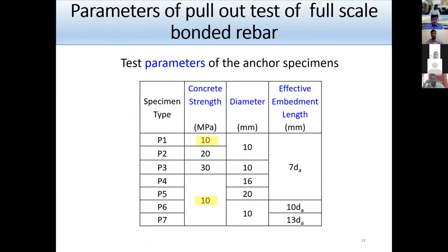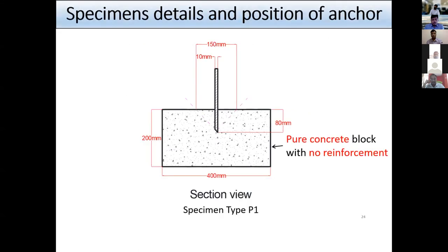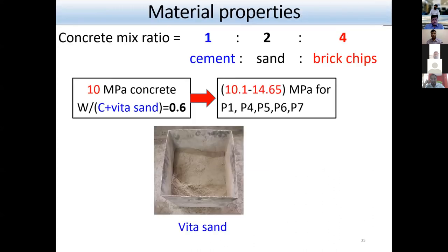For the full-scale test, seven types of specimens were selected, among which P1, P4, P5, P6, and P7 were of low-strength concrete with varying diameter and effective embedment length. Pure concrete blocks with no reinforcement were used, and pit sand was used to produce the low-strength concrete representing the concrete used in Bangladeshi buildings.